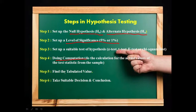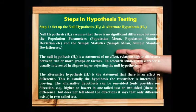In Step 5, we find the tabulated value from the table. In Step 6, we take a suitable decision or conclusion. Now we will discuss each step in detail.